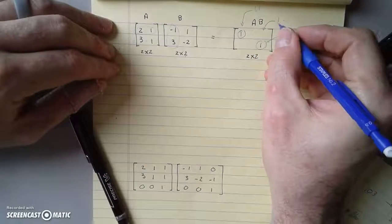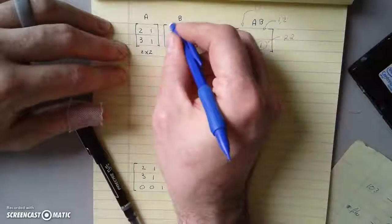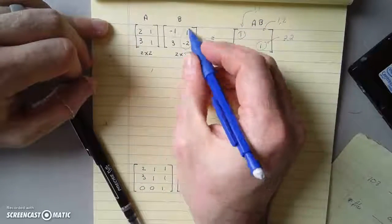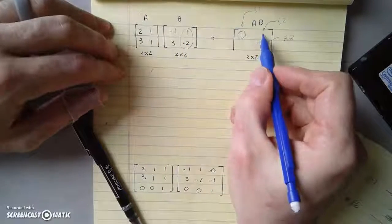What about this? This is 1,2. It's first row, second column. So first row, second column, well that's going to be 2 minus 2 is 0.